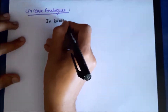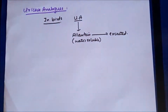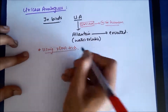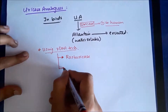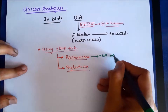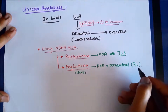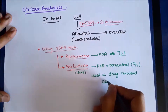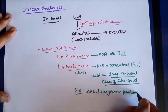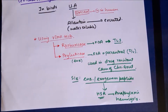A recently developed class of drugs are the uricase analogs. In birds, uric acid is converted into a water-soluble substance called allantoin and then excreted in urine, a process facilitated by the enzyme uricase, which is absent in humans. Using recombinant DNA technology, uricase has been incorporated into drugs such as rasburicase and pegloticase. Rasburicase is FDA-approved for the treatment of tumor lysis syndrome. Pegloticase, administered parenterally by IV route, is used in drug-resistant cases of chronic gout. However, as an enzyme it acts as an exogenous peptide, activating the immune system and potentially producing hypersensitivity reactions resulting in anaphylaxis and immune hemolysis.